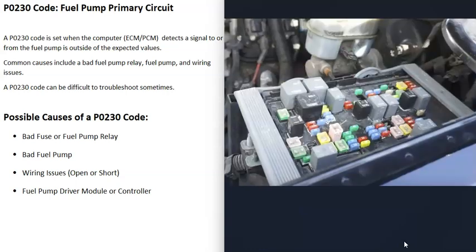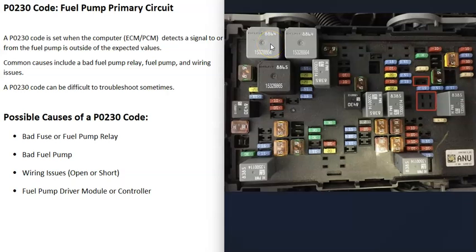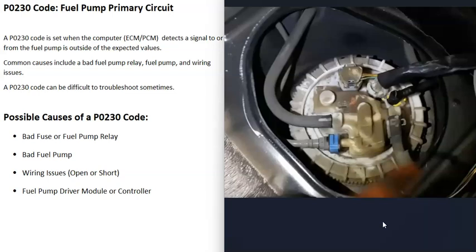Some possible causes of a P0230 code: the first thing could be a bad fuse or a bad fuel pump relay. Find all the fuses related to the fuel pump and the fuel pump relay and make sure they're good. Fuses are straightforward to check. For relays, quite often there will be other relays with the same numbers that you can swap out temporarily — for example, swapping with the horn relay — just to see if it solves the problem. You can also test relays with a multimeter. Make sure your fuses are all good and the fuel pump relay is good.